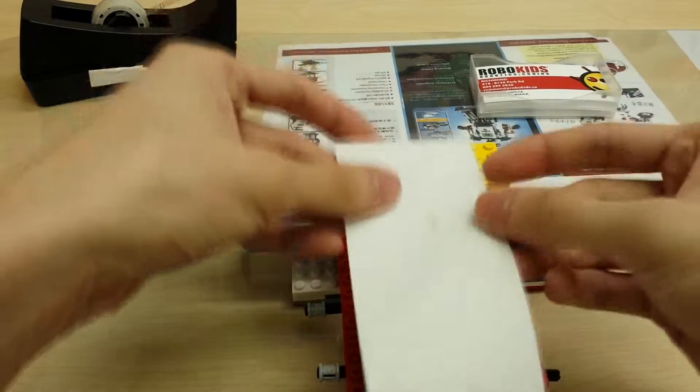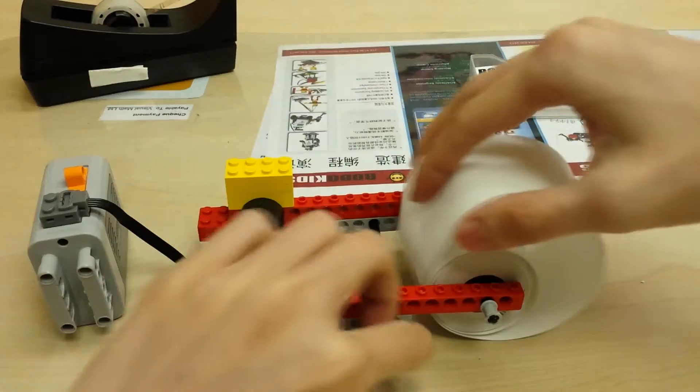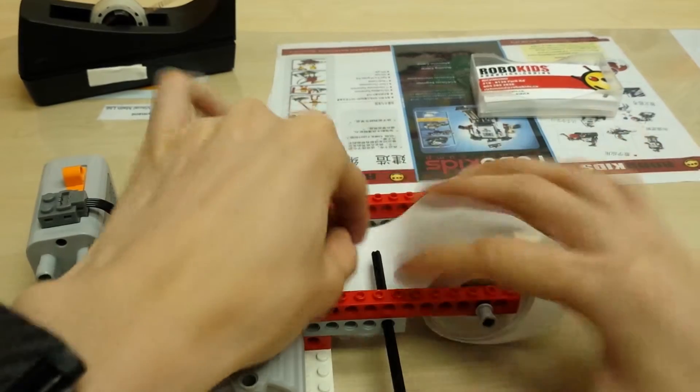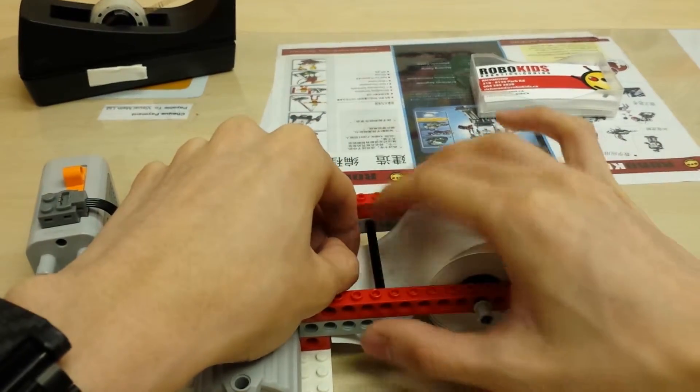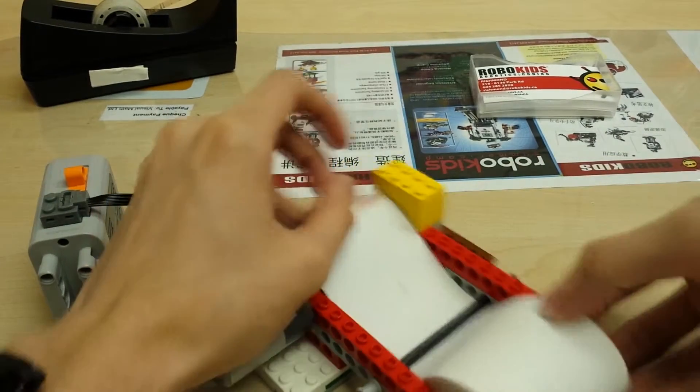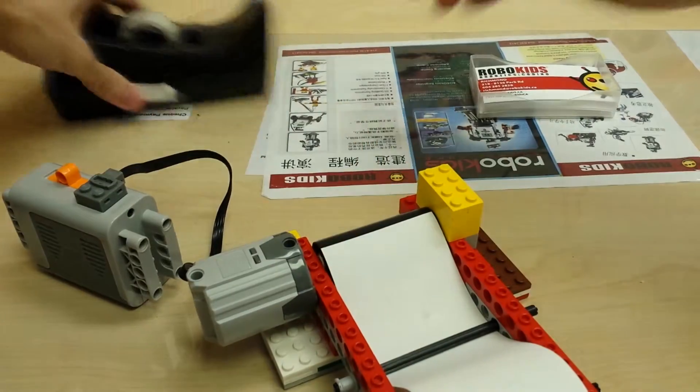So we have our large roll. We're going to put this through the middle. This middle part is going to act as a tension so the paper would be nice and tight on the other side. And that's basically it. We're just going to put it right there and we're going to tape it on.